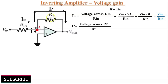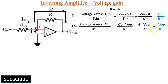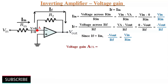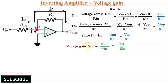And IF is equal to VF by RF — that means voltage across RF divided by RF — which is voltage at point A minus Vout divided by RF. As we know, voltage at point A is zero, so zero minus Vout divided by RF, that is equal to minus Vout by RF. Since feedback current IF is equal to input current Iin, both these equations are equal. That means minus Vout by RF is equal to Vin by Rin. Therefore, the closed loop voltage gain ACL is equal to Vout by Vin, that is equal to minus RF by Rin.